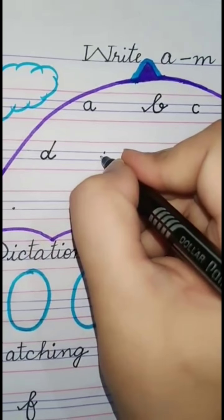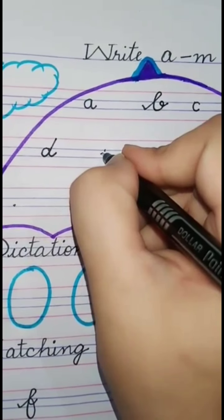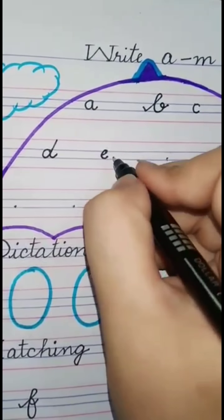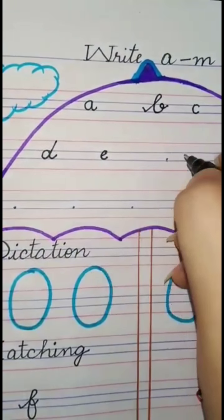Next is ee. Firstly you make an ai, then make a kha. E - Elephant.